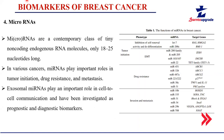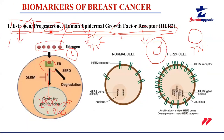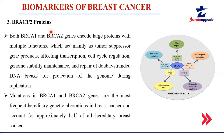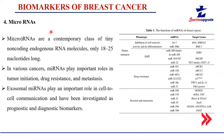The fourth biomarker is micro RNA. While the three receptor markers, circulating tumor cells, and proteins are well-known, micro RNAs are now evolving rapidly as a means to diagnose cancerous cells more easily.